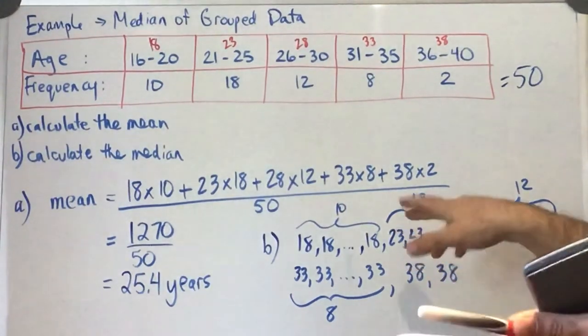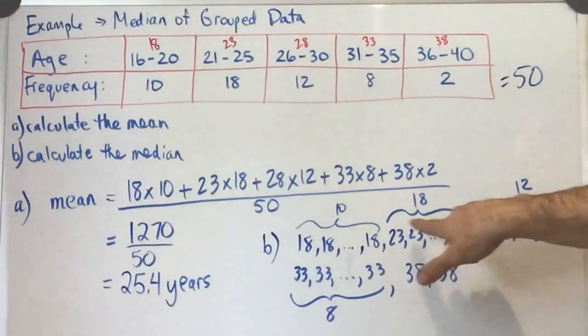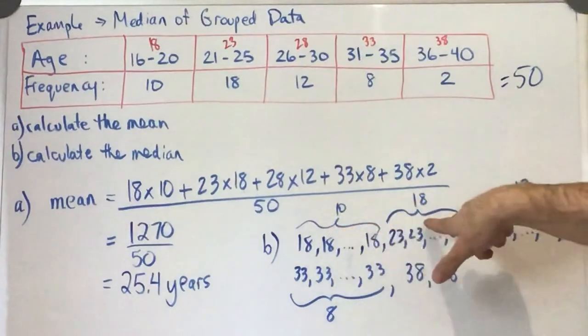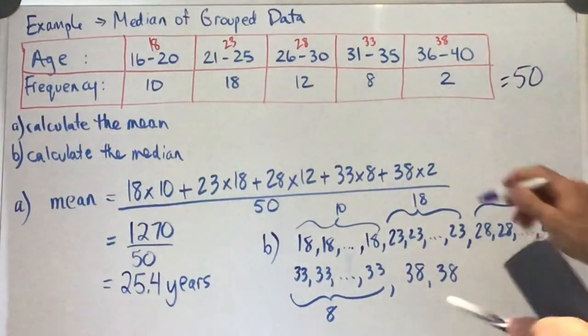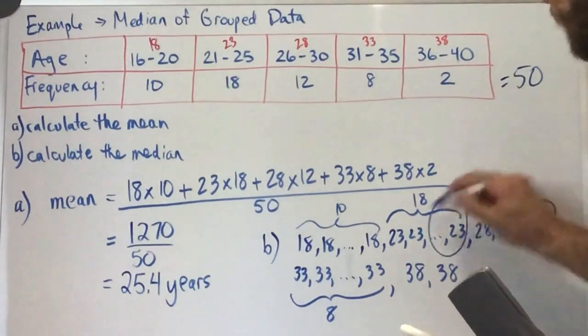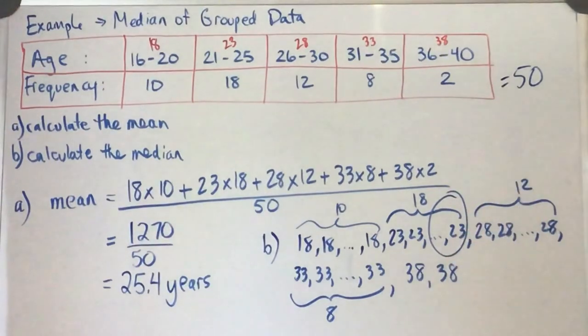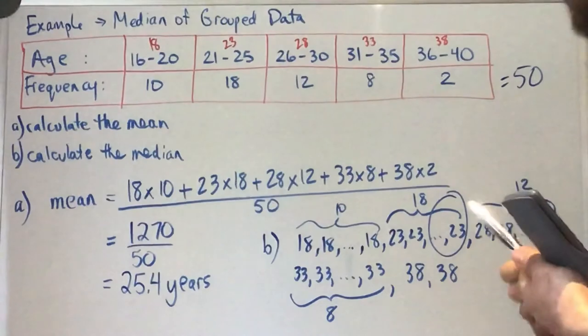That's going to be around 25, which is going to be—so 25 entries in, we're going to be into this grouping. So it'd be somewhere near the end of this group of 18 is where that 25th entry would be. So we can say here...